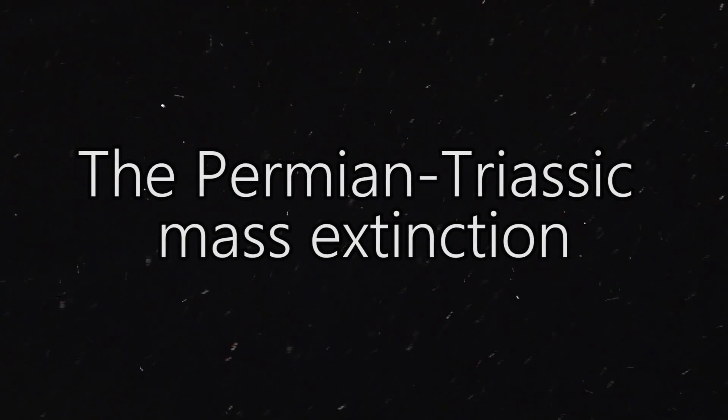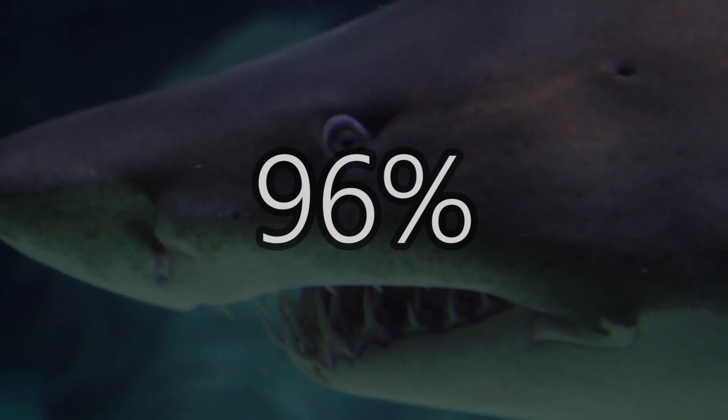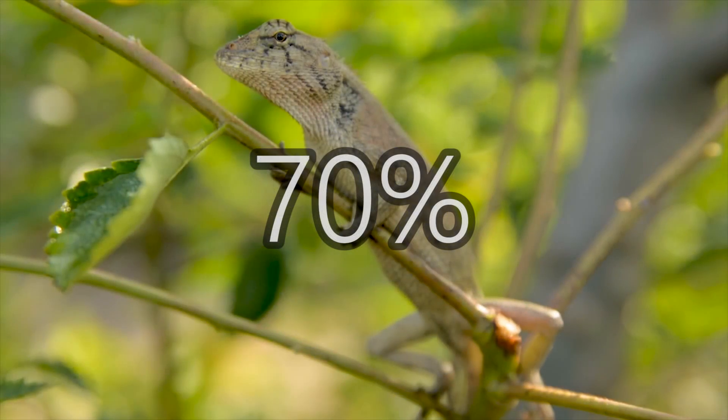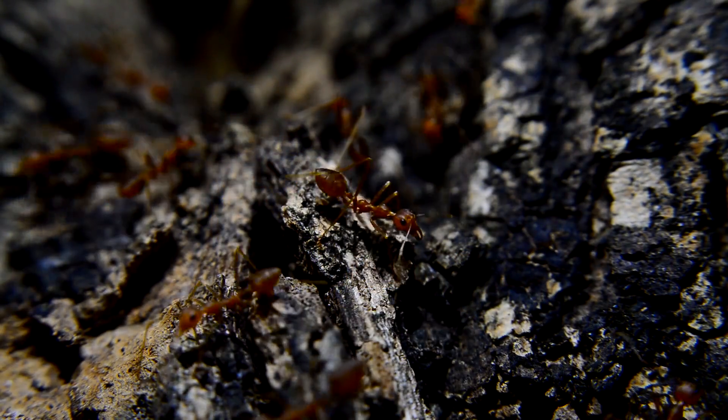Depending on our future conservation efforts, we might be able to avoid taking second place as the deadliest organism to all other organisms in all of Earth's history. Even if we actively hunted and made it our mission to wipe out as many species as possible, it's going to be pretty hard to beat the deadliest organism of all time. Of all the mass extinction events, the deadliest is the Permian-Triassic mass extinction event, which happened around 250 million years ago. It killed off around 96% of all marine species, around 70% of terrestrial vertebrates, and is the only known extinction event to cause mass extinction in insects.